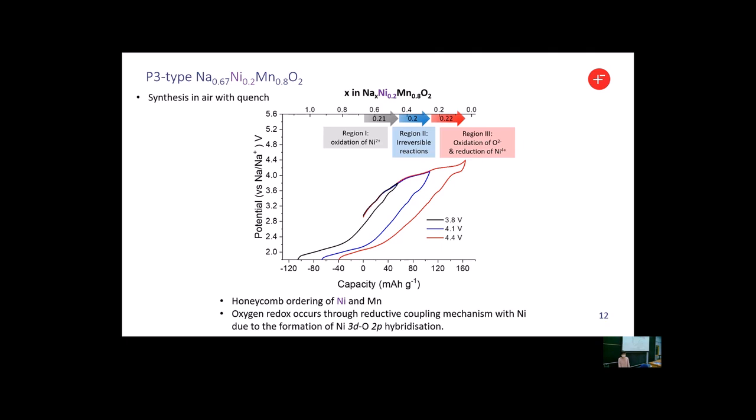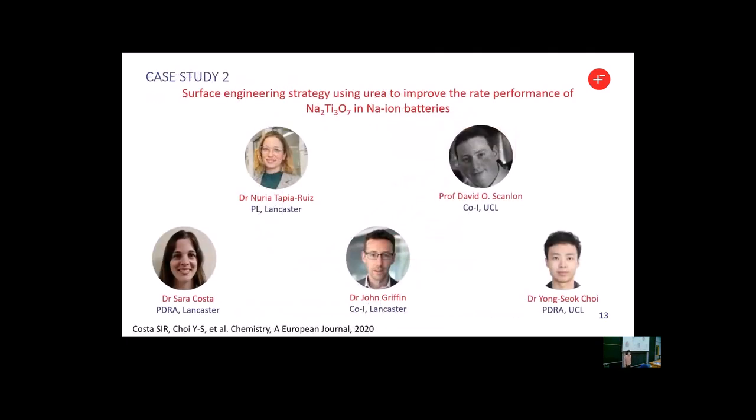In that study, using various spectroscopic techniques allows us to propose that the formation of nickel 3d and oxygen 2p hybridization is responsible for oxygen redox that occurs by a reductive coupling mechanism with nickel.